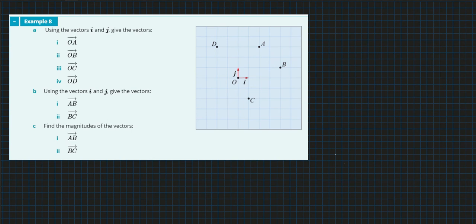You can see this space here on the right with the points D, A, B, C and the origin. The vectors I and J are the unit vectors that we've been talking about already in this exercise.